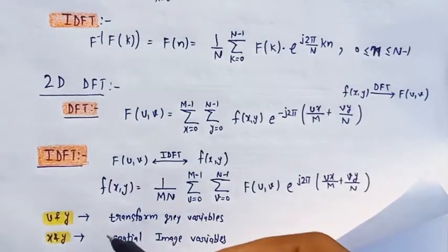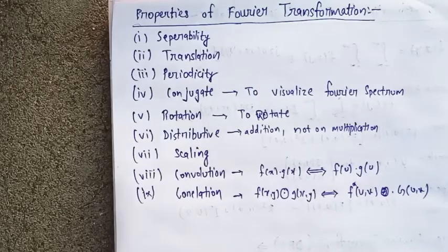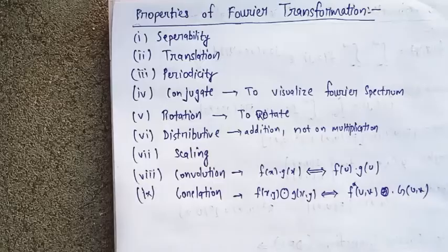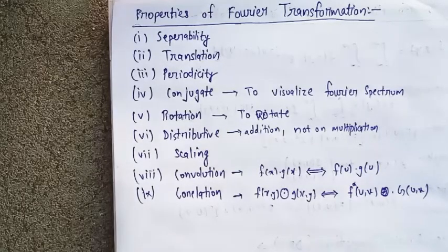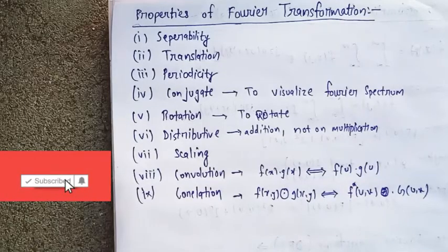Now we will discuss the properties of Fourier transformation. There are nine properties. First one is separability. It means if we want to create the 2D transformation using two 1D transformations, we can do this. If I use two 1D transformations, I can easily get 2D transformation.